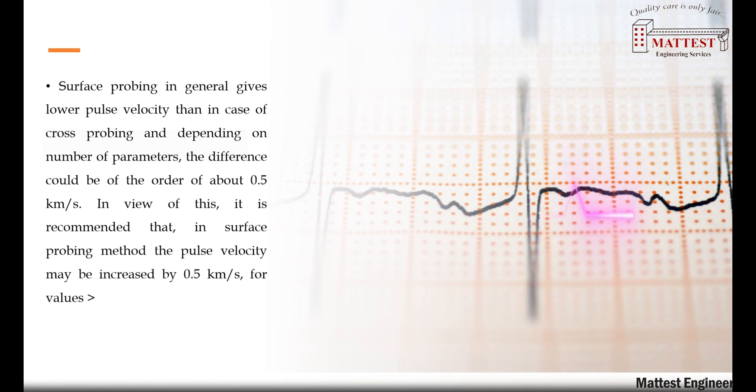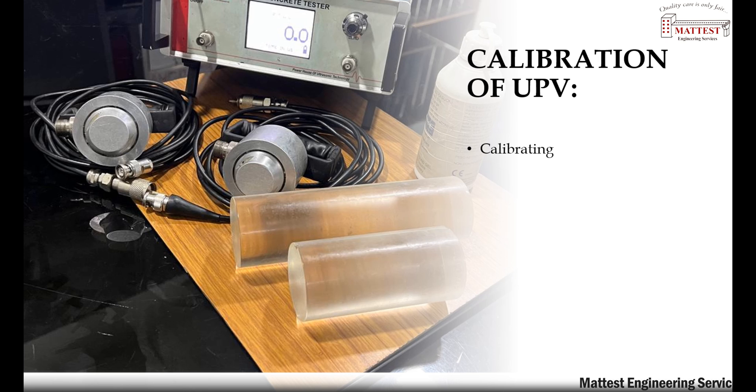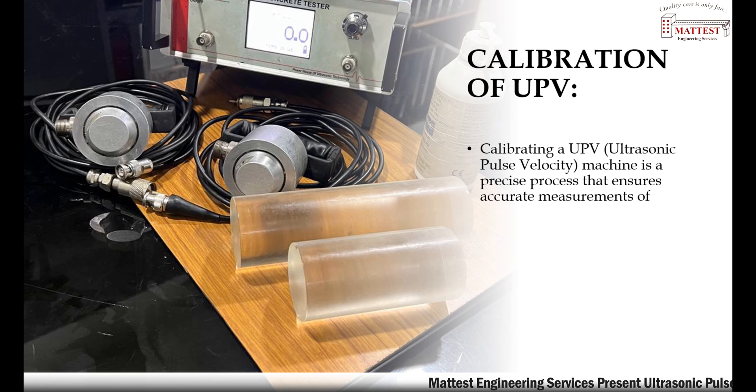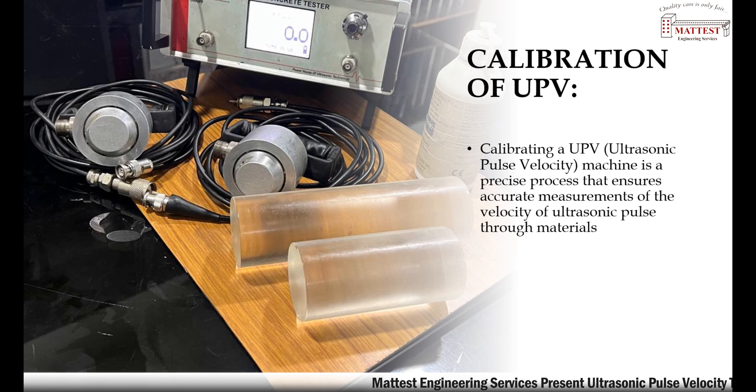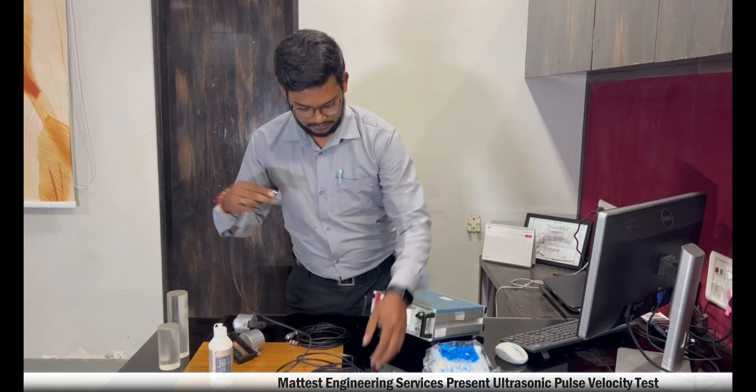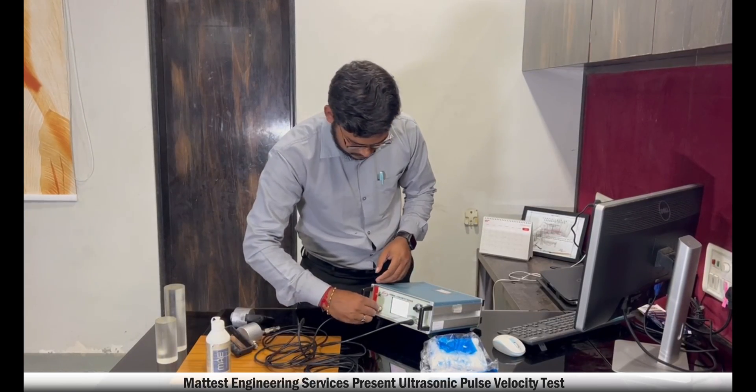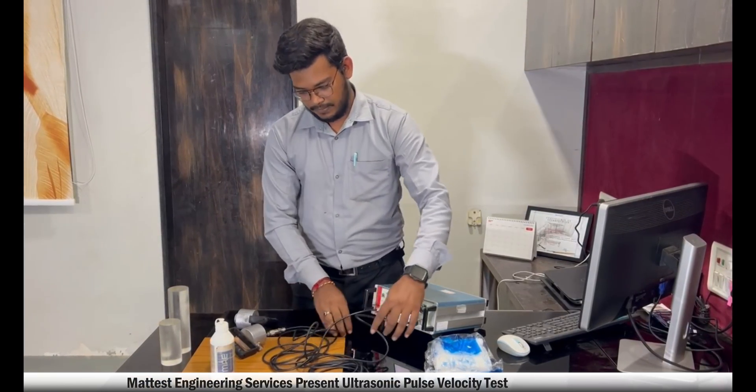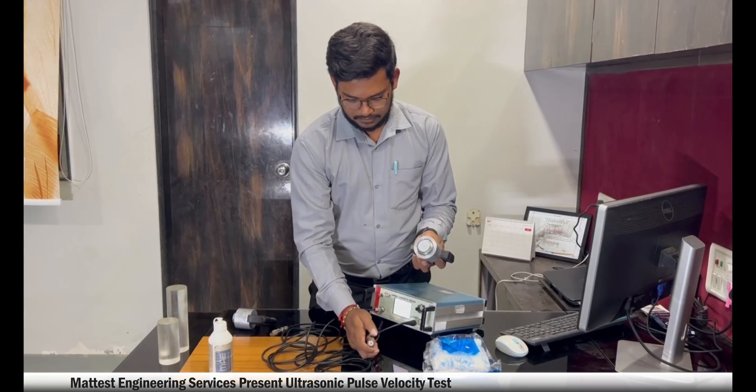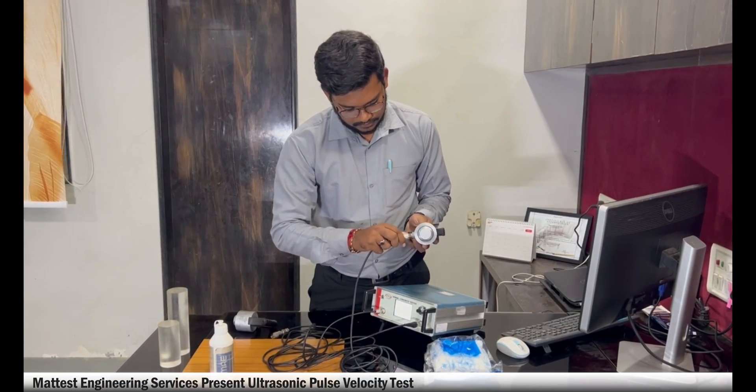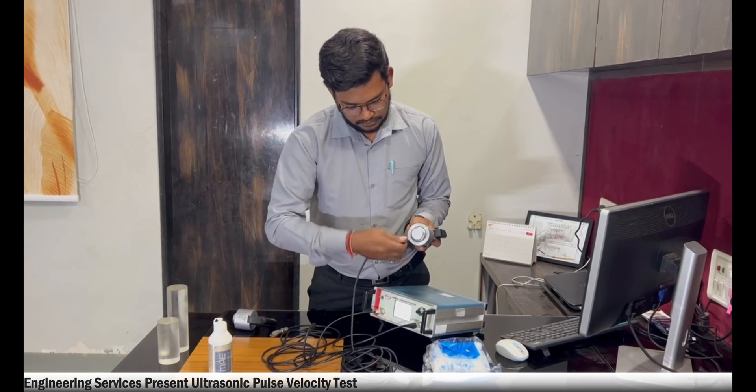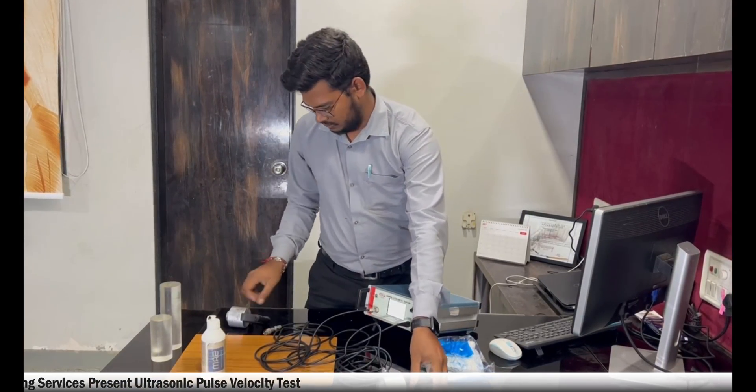Calibration of UPV: calibrating a UPV ultrasonic pulse velocity machine is a precise process that ensures accurate measurements of the velocity of ultrasonic pulse through materials. Here are steps to calibrate a UPV machine. Prepare the equipment: ensure the UPV machine is in good working condition. Have a known reference material with a well-defined ultrasonic velocity for calibration. Typically, a calibration block—two types of standard calibration bar, 60 micron and 40 micron, made of a material with a known velocity—is used.